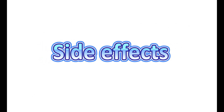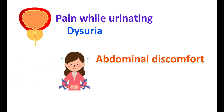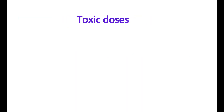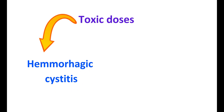The side effects of methenamine include pain while urinating, a condition called dysuria. It can also produce abdominal discomfort, nausea and vomiting, skin rashes, and pruritus. Rashes and pruritus can be observed due to increased quantities of hippuric acid and other allergic components in the medication. At toxic doses, methenamine can produce hemorrhagic cystitis due to increased bladder irritation, and even liver failure.